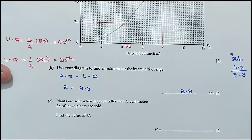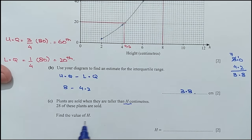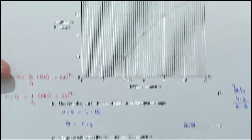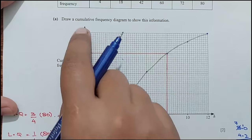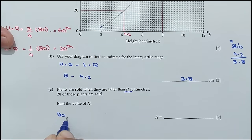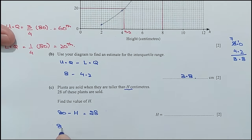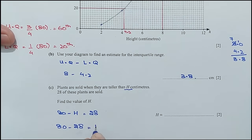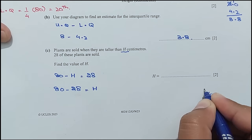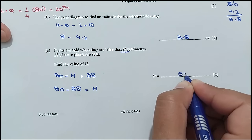For part C: plants are sold when taller than H centimetres, and 28 plants are sold. Total plants are 80, so 80 minus H equals 28, giving H equals 80 minus 28, which is 52. The H value is 52.